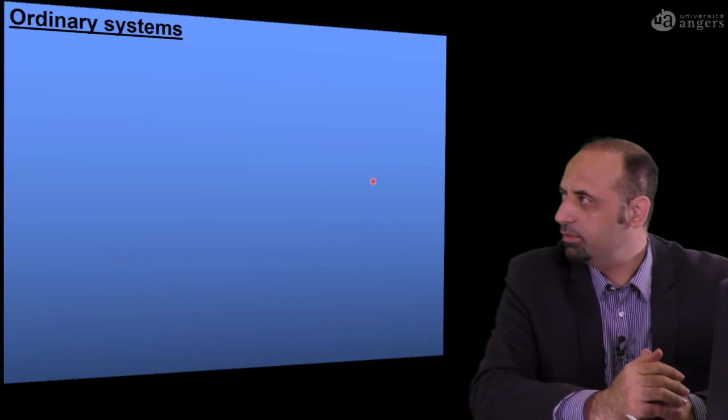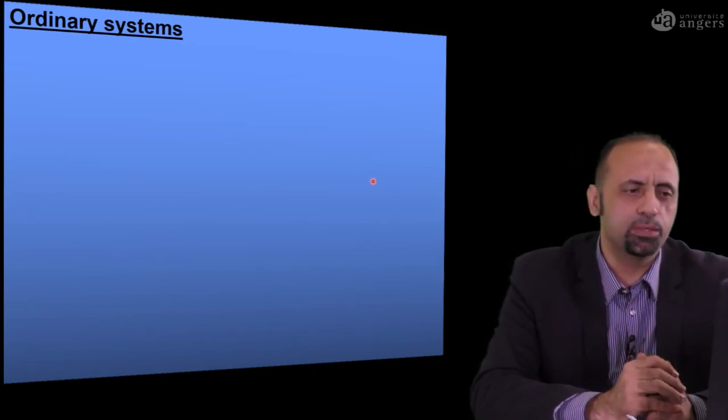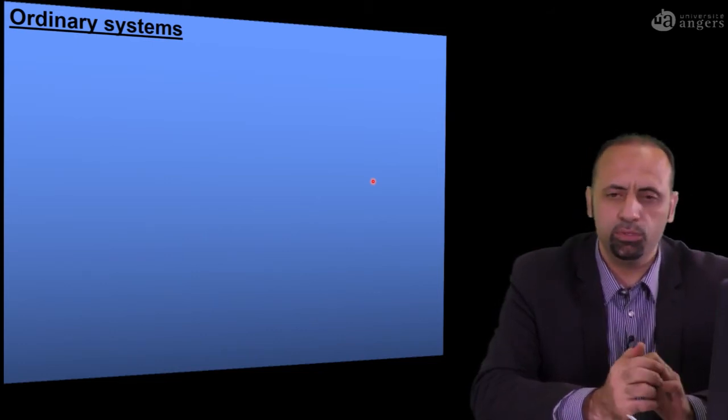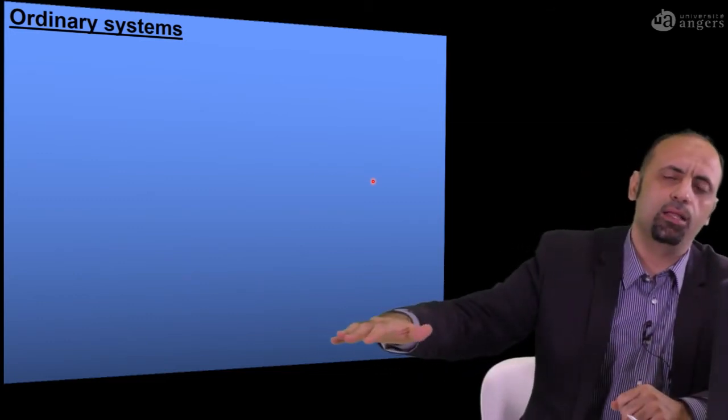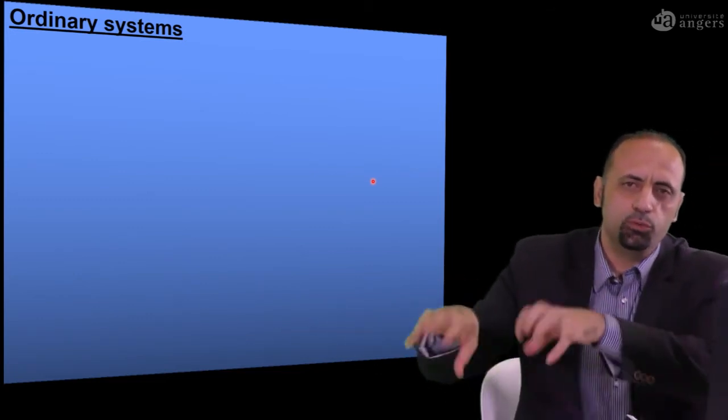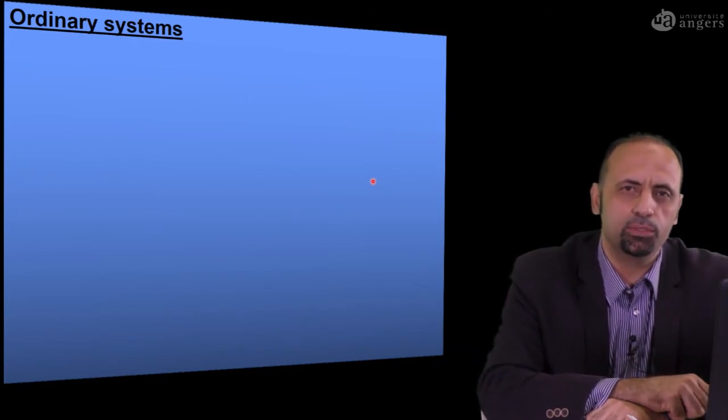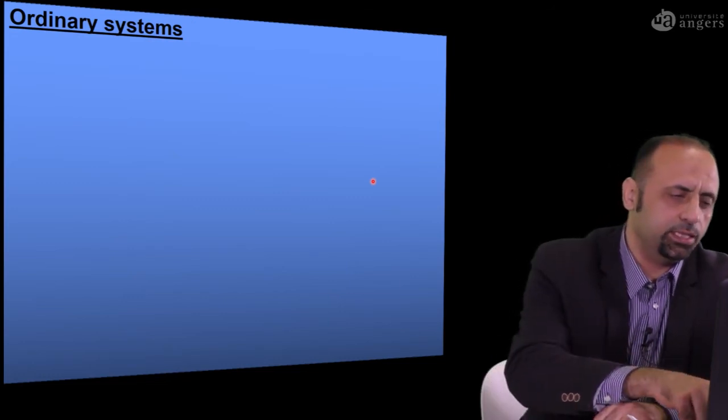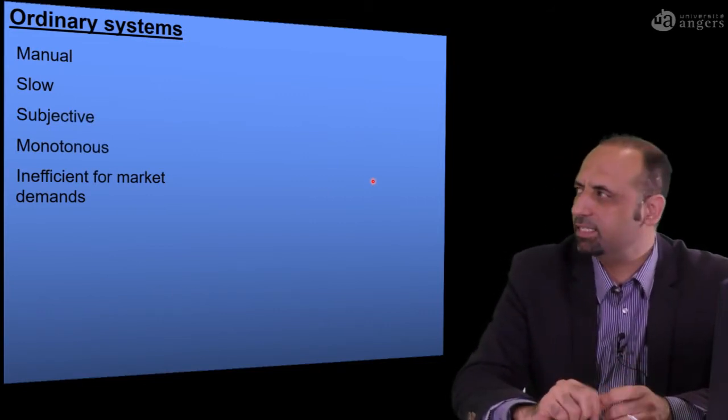So how can we evaluate the quality of the product? There are two methods. The first method is to use ordinary methods. Workers usually stand along the conveyor belt and start to pick up rotting or diseased or damaged products away from the conveyor belt in production systems. Unfortunately, all of these systems are manual, slow, subjective, tedious, and of course not sufficient for market demands.